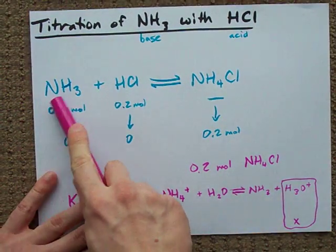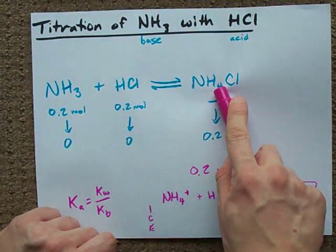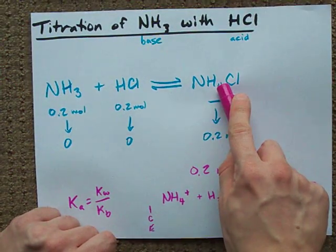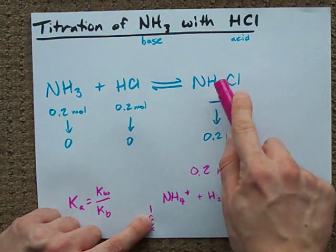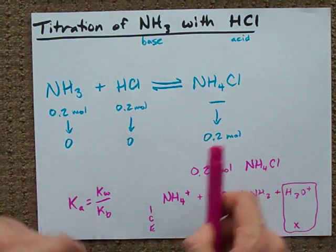But the deal here is that this is your neutralization equation. This is what you end up with in solution at the end, and you have to use NH4+ in an ice table to calculate the pH at equivalence.